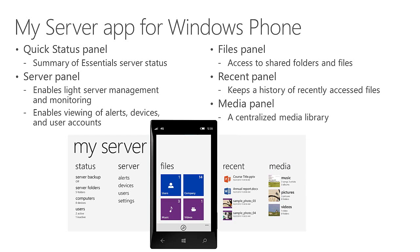The My Server app for Windows Phone is organized into a number of different tiles, including a status tile showing a summary of the environment, a server tile where you can see alerts, devices, and users as well as adjust some settings. There's also a files panel where you'd see shared folders in the environment to access different files from the server, and a tile that shows your recent activity so you can more quickly start working with recently used files. If you install the optional media capabilities for the Essentials Experience, there's a media panel where you can stream music, videos, or pictures from the server to the phone.